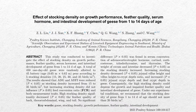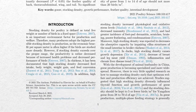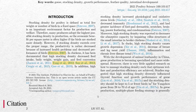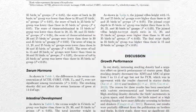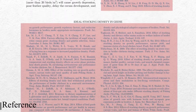Let's look at this journal article titled 'Effect of stocking density on growth performance, feather quality, serum hormone, and intestinal development of geese from 1 to 14 days of age.' If you look at the introduction, you can see several citations — for example, Estives 2007, Tong et al. 2012, Sun et al. 2013, and so on. These are called citations. And if you scroll all the way down, you can see the reference list, which has all the sources mentioned in the body of the paper.